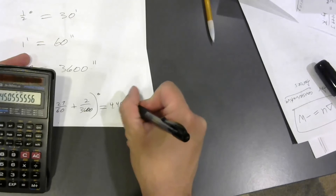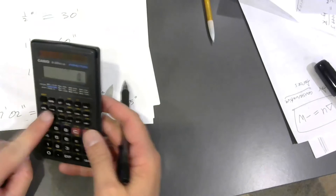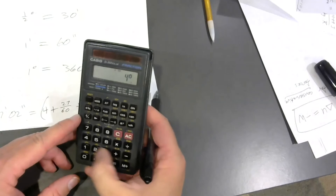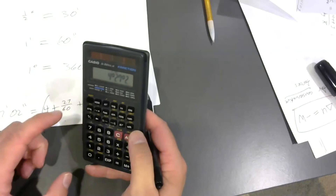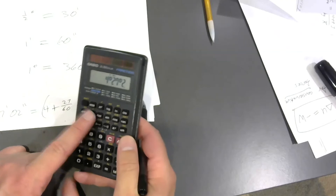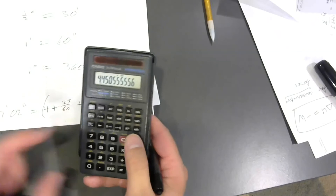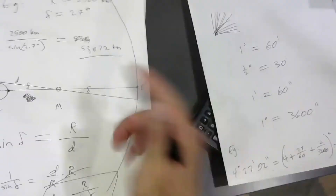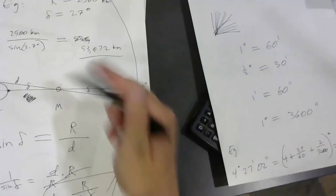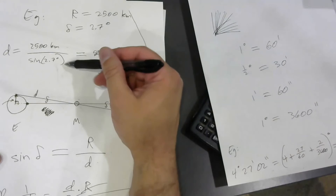You will need your angle in decimal degrees — that's what you're going to plug into the sine function. When you evaluate D as polar radius over the sine of your parallax angle, you need to enter this in decimal degrees. Now let me show you how to use Stellarium.